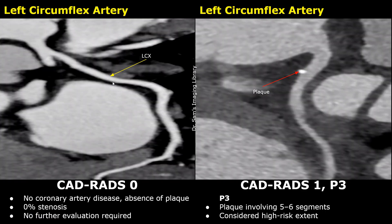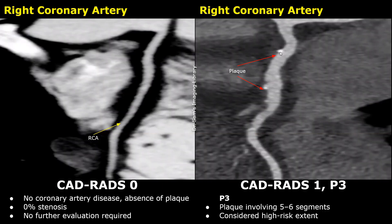In the same case, the left circumflex artery also had a small plaque in its proximal segment. The left circumflex artery is divided into proximal and distal segments. So in total, we have two segments from the left anterior descending artery, one segment which is the first diagonal branch, and one segment from the left circumflex artery — equaling four segments with plaque involvement so far. The right coronary artery also had plaque involvement. It is divided into proximal, middle, and distal segments, with plaque present in the proximal segment. So now we have five segments in total, giving a plaque burden of P3. The maximum stenosis is still between 1 and 24% in all arteries, so it is classified as CADRADS-1, P3.